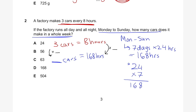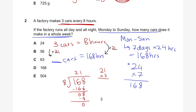168 divided by 8: 8 goes into 1 zero times, 8 goes into 16 twice, remainder 0, bring down the 8, 8 goes into 8 once, no remainder. So we multiply by 21. Then 3 times 21: 3 times 1 is 3, 3 times 2 is 6 — that's 63 cars in total. So the answer to question 2 is C, 63.